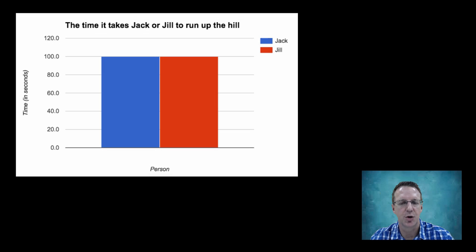Consider this graph that shows the results of the time it took for Jack and Jill to run up the hill. They each ran five times and the averages were plotted. The conclusion would be pretty simple, that they pretty much take the same time to run up the hill.